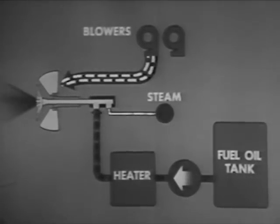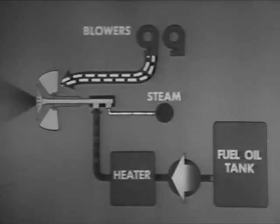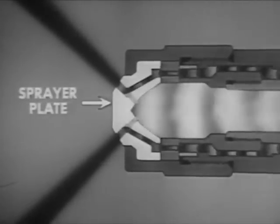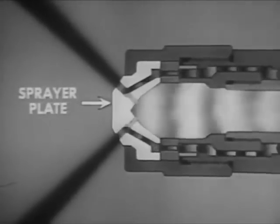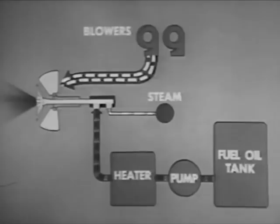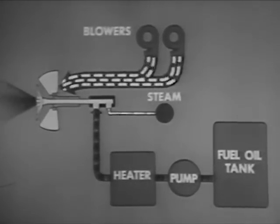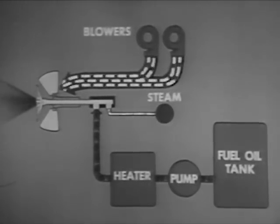Control of the burner involves regulating the air, oil, and steam supply. Regulate oil pressure to regulate the quantity of oil. When you increase or decrease oil pressure, you must change the steam pressure correspondingly to get good atomization. You must also change the sprayer plate in the burner if the capacity of the plate is incorrect for the new firing rate. As with most burners, you adjust the speed of the blowers and the number in service to control the air supply.